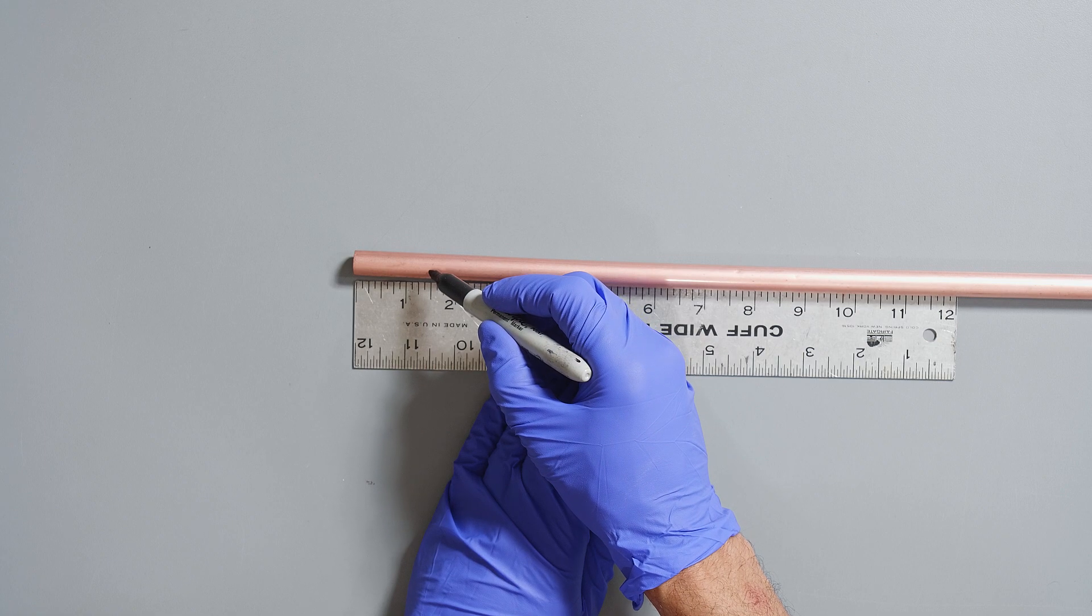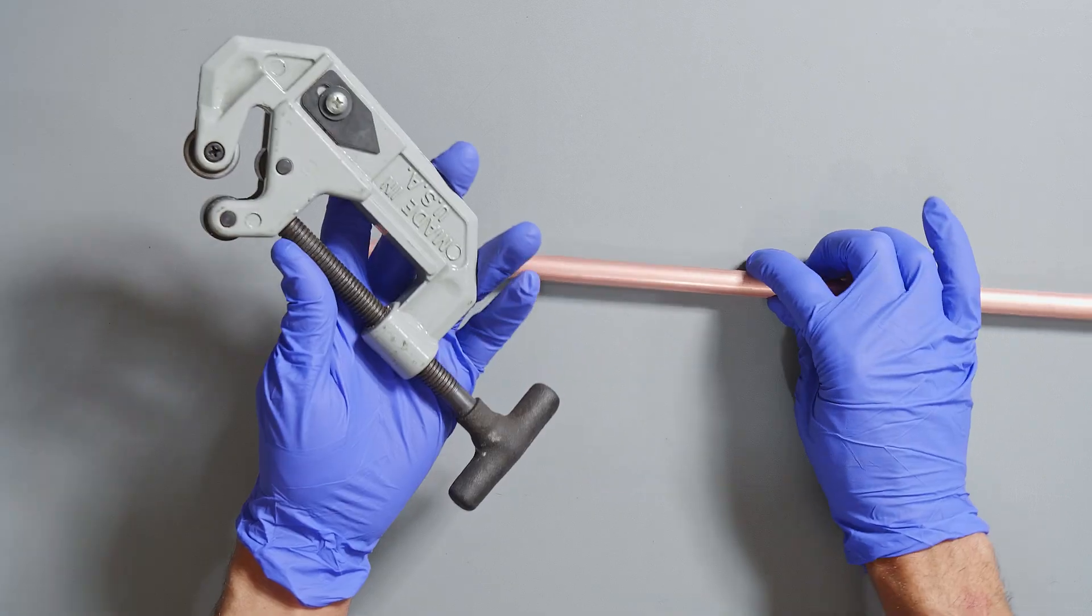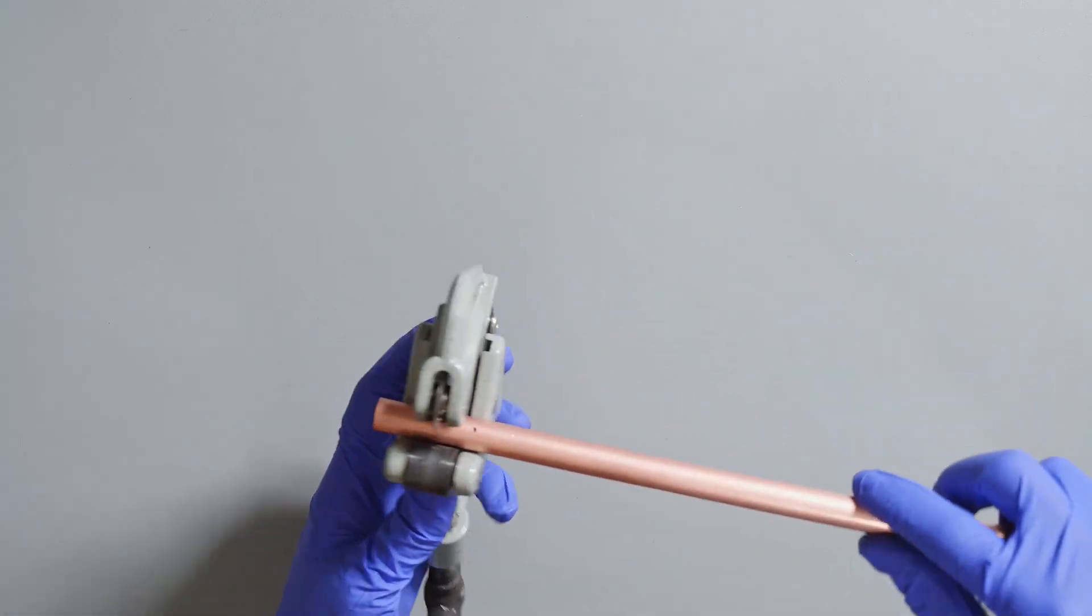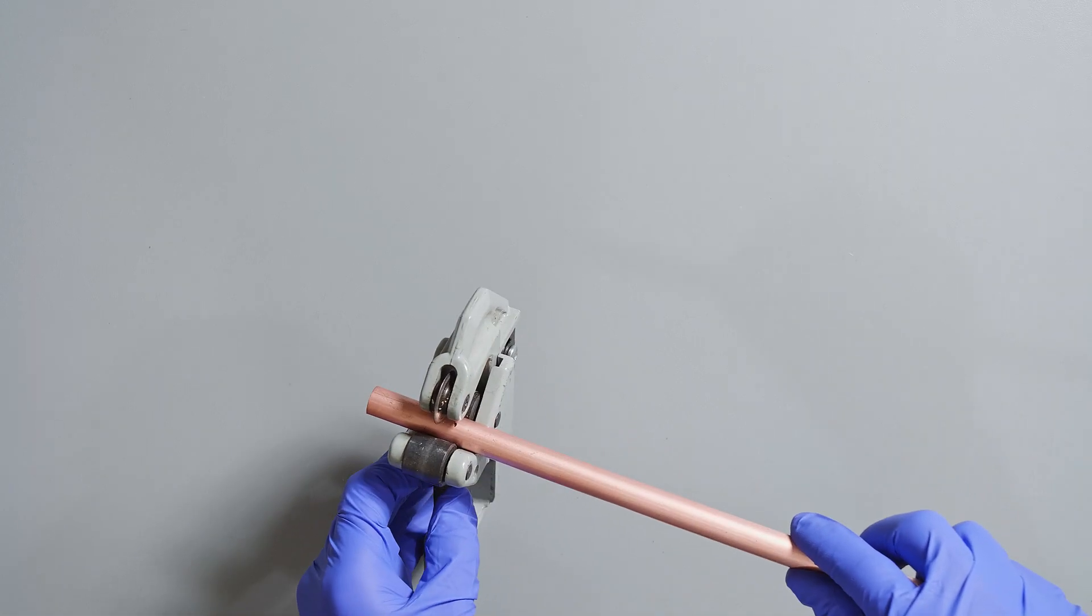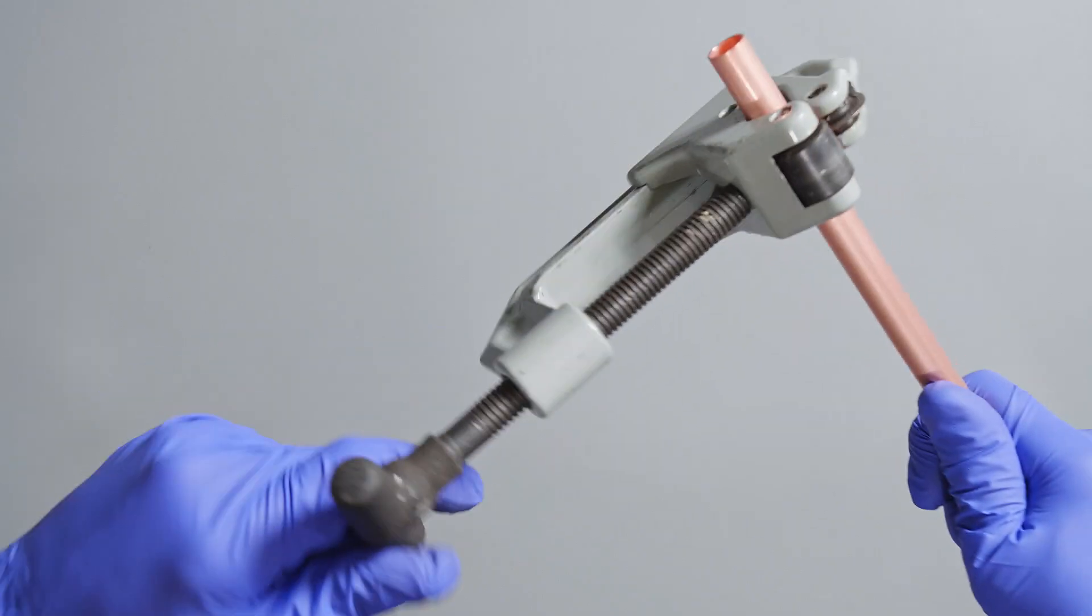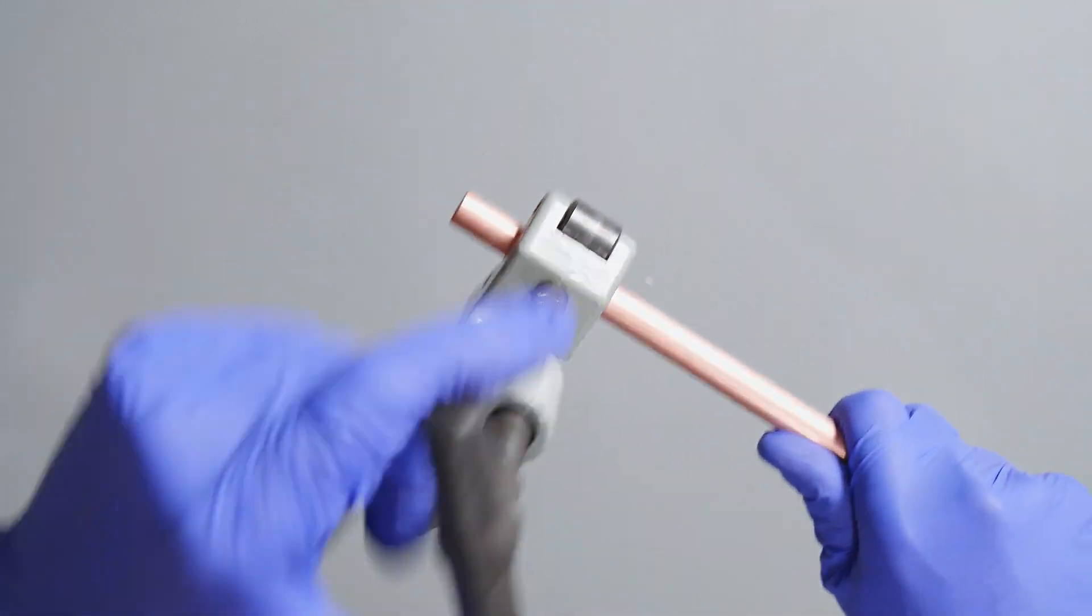The first thing we're going to do is measure about an inch and a half on our copper tubing, and then we'll just stick it through our pipe cutter or whatever you use to cut the tubing. It's not really that important as long as it's cut.